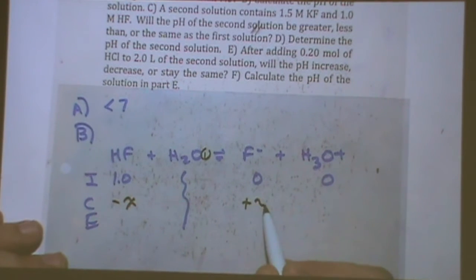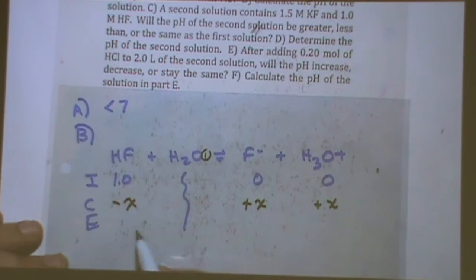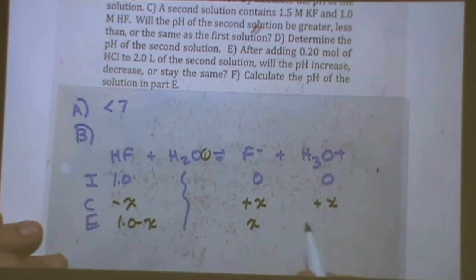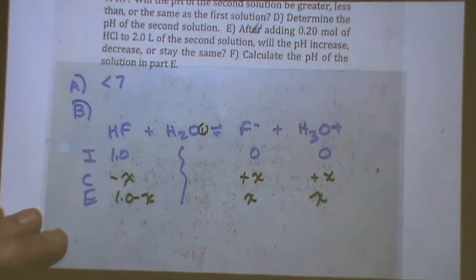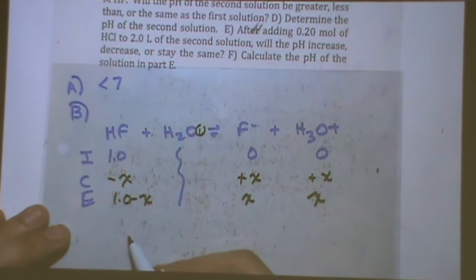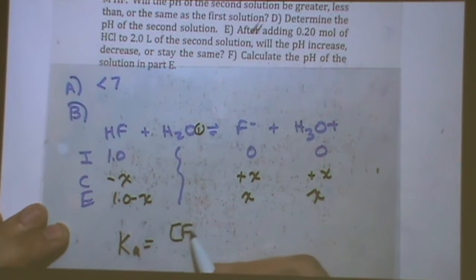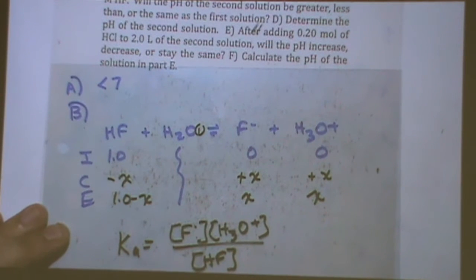Shifts to the right towards the zero, or Q is zero, so it shifts right. So if I write now, hey, I'm going to get the equilibrium expression. Ka, I'll just write it out for fun, is the products over the reactants. I don't include H2O in that scenario.